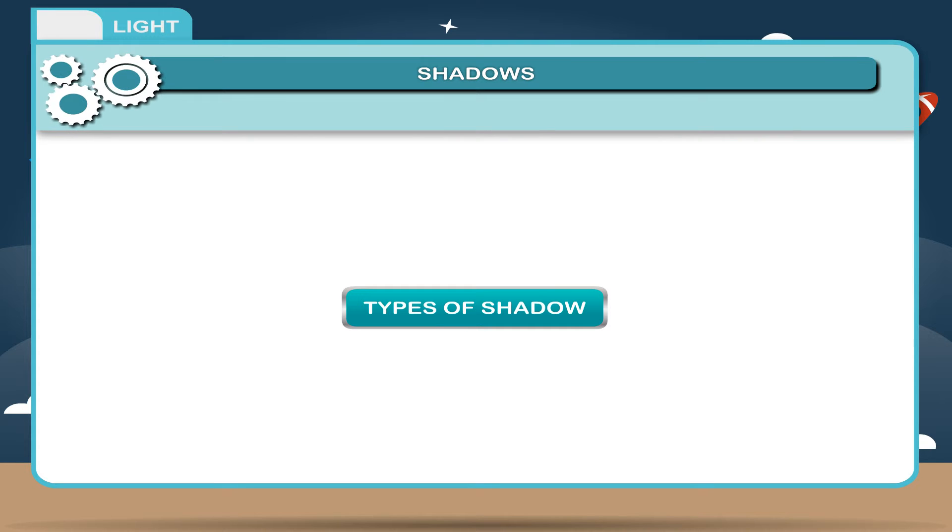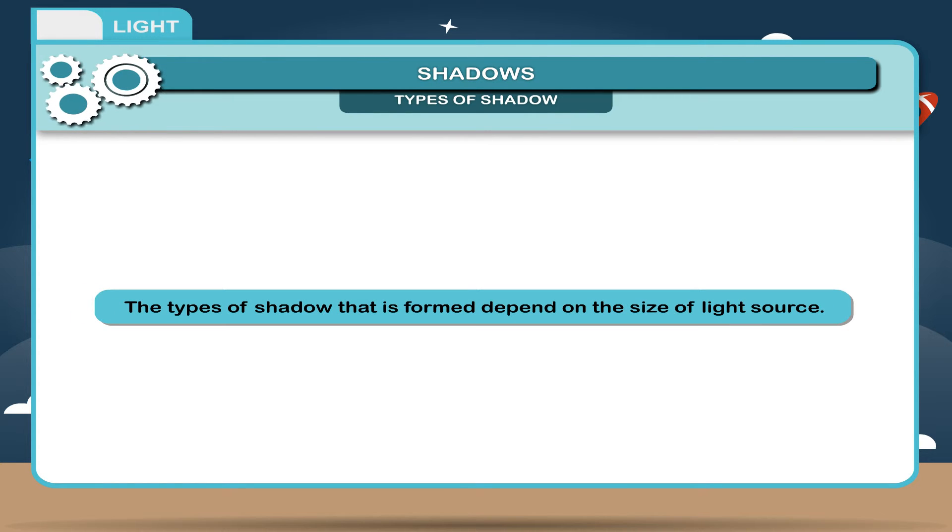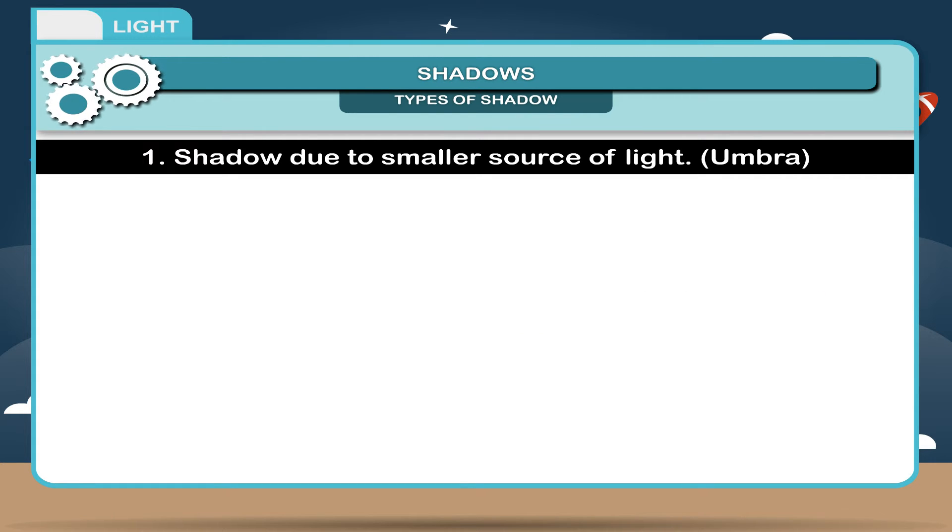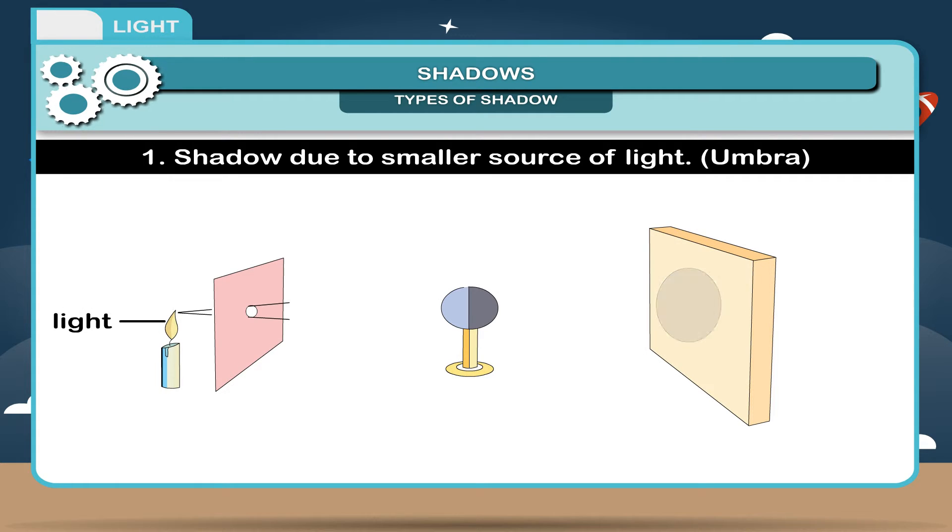Types of shadow. The types of shadow that is formed depend on the size of light source. 1. Shadow due to smaller source of light. Umbra: If the source of light is very small, only one dark shadow is formed. This is known as Umbra.